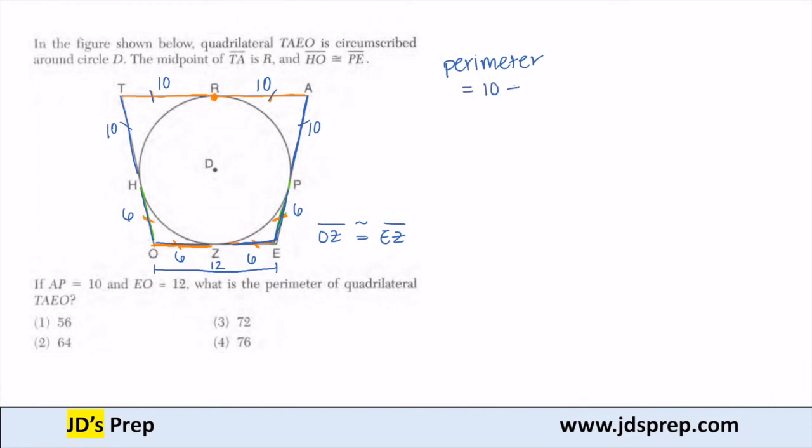So starting at the top, I have 10 plus 10. Along the right, 10 plus 6. Along the bottom, 6 plus 6. And then along the left, 6 plus 10. Adding up all of those measures, we get our answer to be 64.